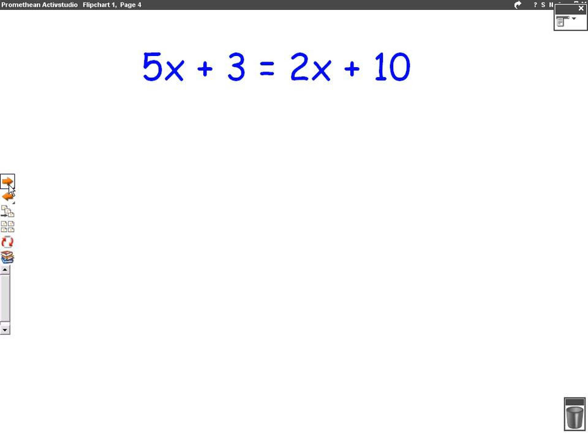This next question is the hardest type that you'll get. It's when there's a letter on both sides. So we have 5x plus 3 on one side. And 2x plus 10 on the other side.